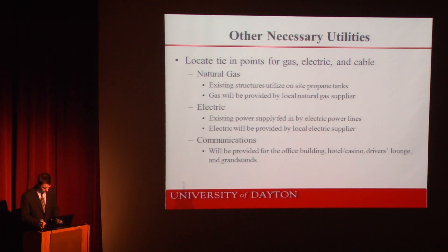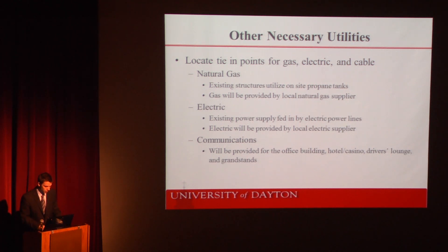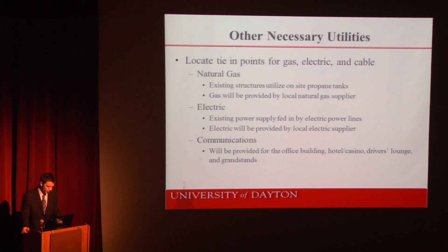Additional utilities to be considered include electric, gas, and cable, and tie points must be located prior to construction. Existing structures on site currently utilize propane tanks, so new gas pipelines will need to be installed and natural gas will be provided by the local natural gas contractor. Existing power is fed to the site by power lines and electric for the proposed site will be supplied by the local electric supplier. Cable will need to be run to the office building, hotel casino, hospital, driver's lounge, and grandstands to provide necessary communication features for race days.